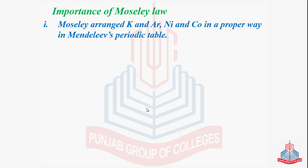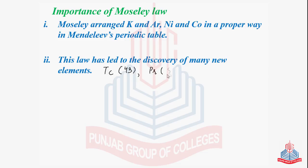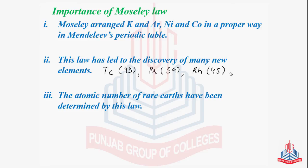As atomic number is the characteristic of an element, it helped Moseley to arrange the elements in a proper way. Apart from that, it also led to the discovery of many new elements, such as technetium with atomic number 43, praseodymium with atomic number 59, and rhodium with atomic number 45. These were some of the new elements whose discovery was a result of Moseley's law. Lastly, the atomic number of the rare earths have been determined by this law.